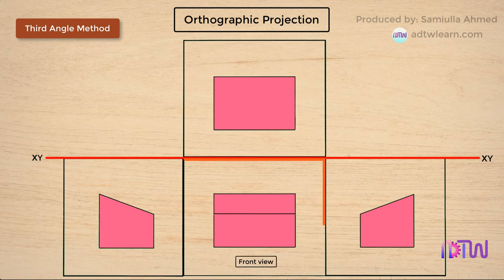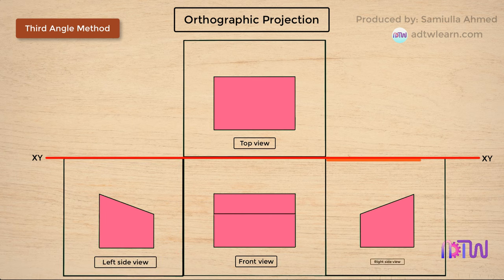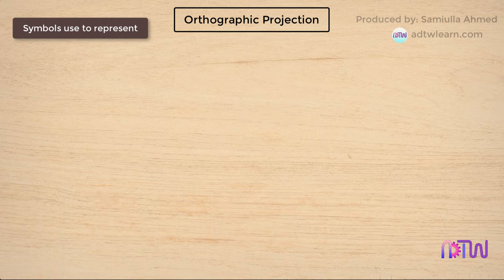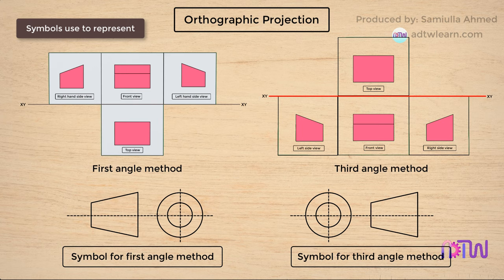When we unfold the planes according to the orthographic rule, we get the front view on the bottom of the XY line, a top view above the XY line, the left side view on the left side of the front view, and the right side view on the right side of the front view. This is how the first and third angle projection methods work. These are the symbols used for representing first angle and third angle methods.